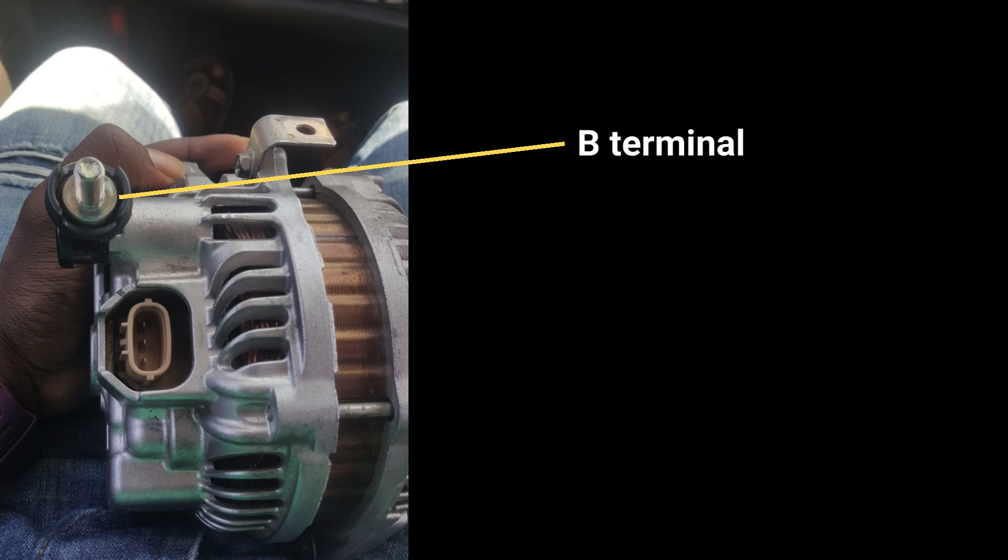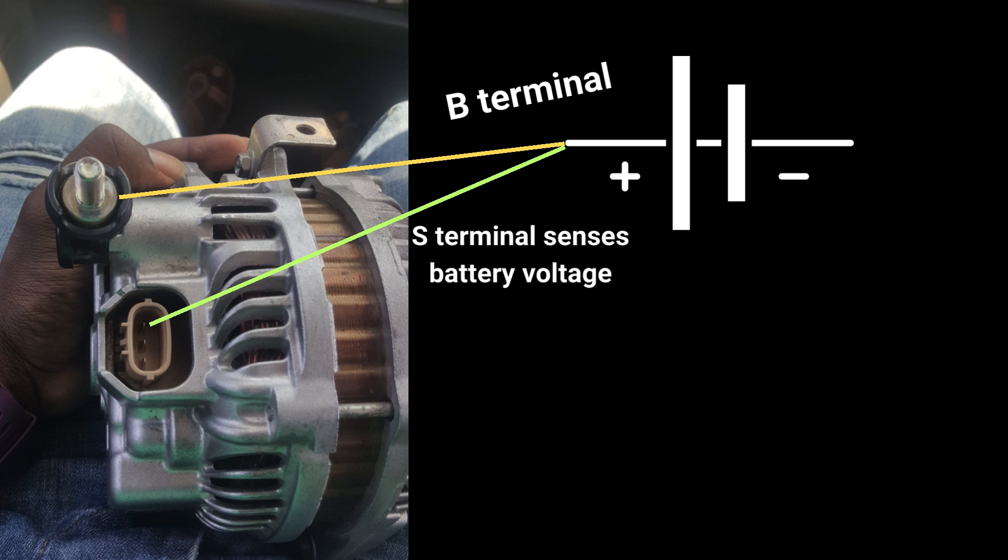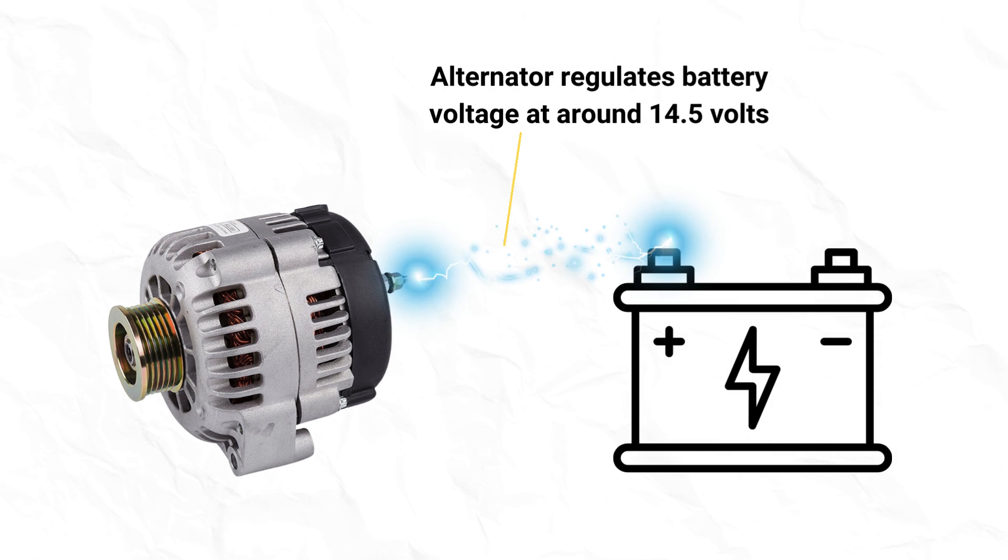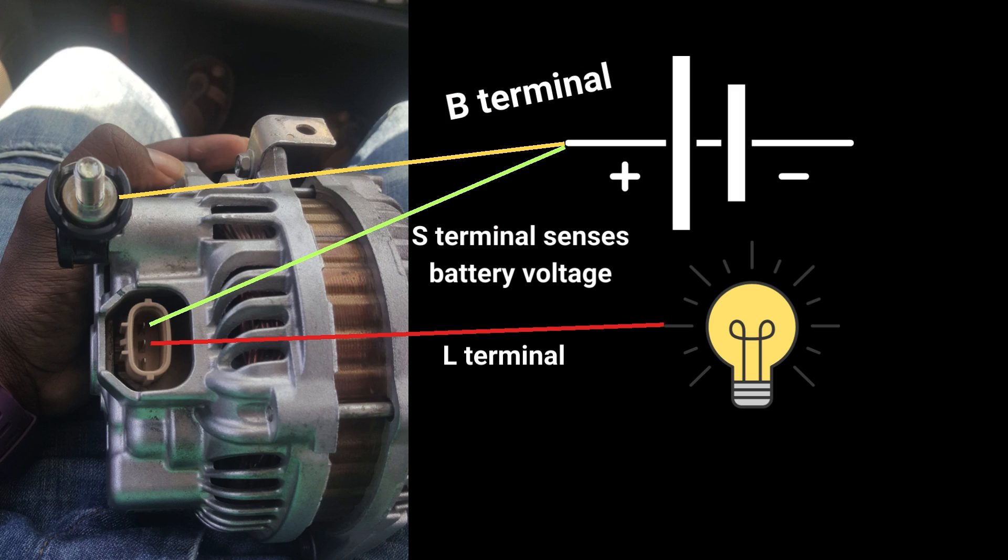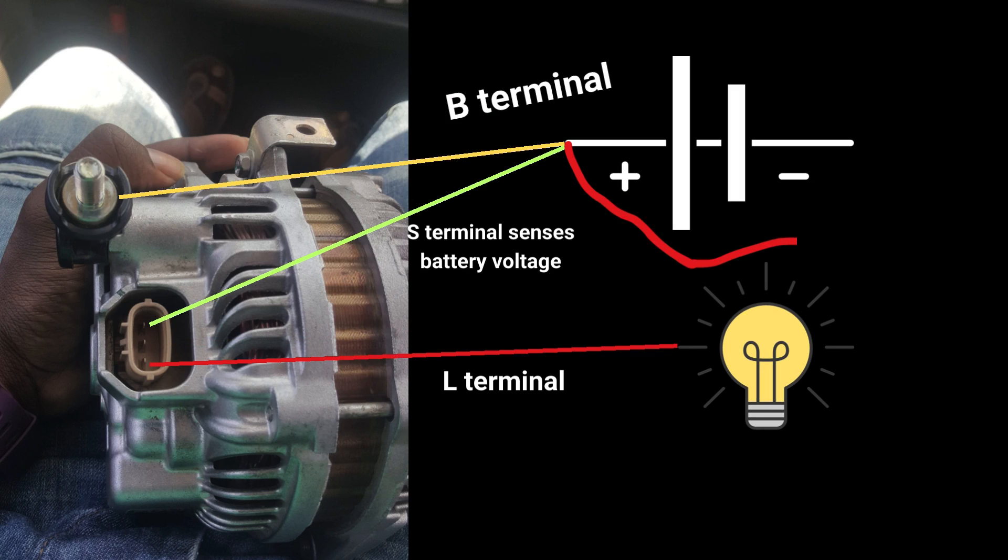B terminal is the main positive output terminal of the alternator, often a stud or covered nut. S terminal of the alternator senses the battery voltage so that the alternator can regulate battery voltage output at around 14.5 volts. It's often connected to the battery or a main junction. Then there is L terminal which is connected to the charging light. One end of the battery warning light is connected to the positive terminal of the battery and the other end with L terminal.